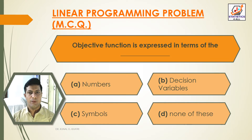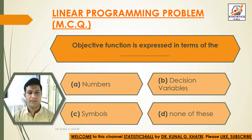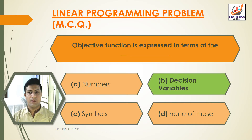Question 6: Objective function is expressed in terms of the dash. Option A: Numbers. Option B: Decision variables. Option C: Symbols. Option D: None of these. Answer: Option B — Objective function is expressed in terms of the decision variables.